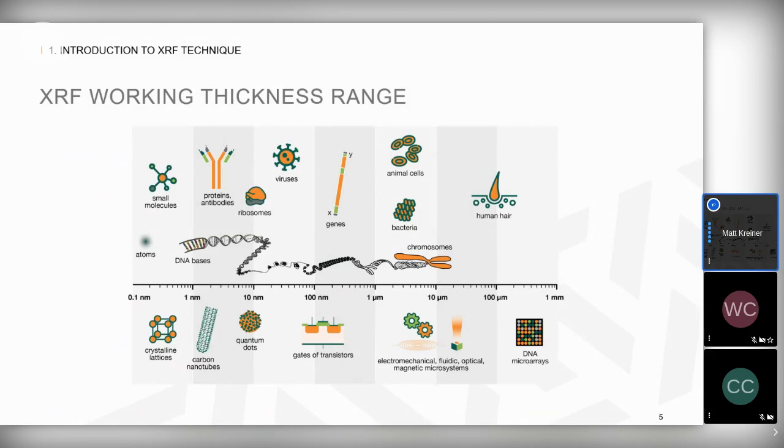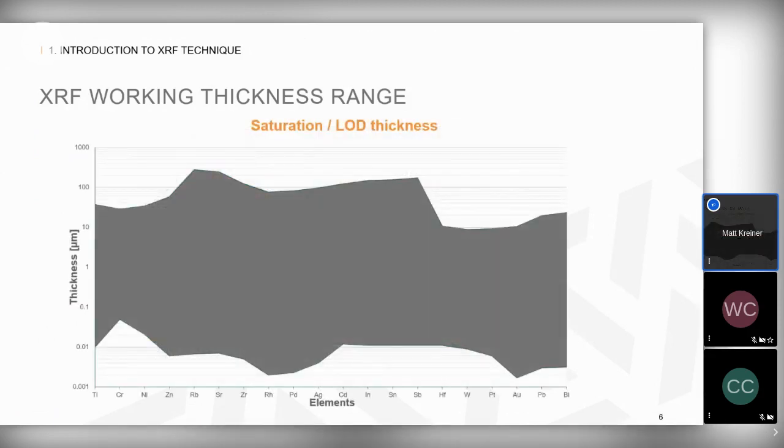XRF is versatile not only for the range of elements that it can measure, typically aluminum through uranium, but also the thickness range it can quantify for those coatings. With XRF coatings analyzers you can measure down to the nanometer scale or as thick as tens of microns or several mils.